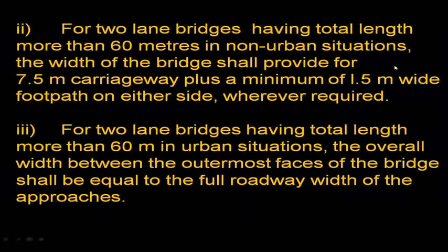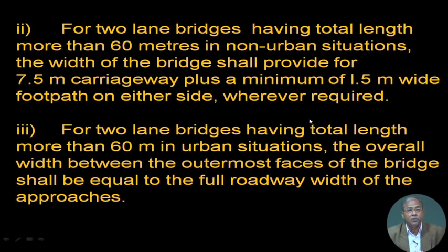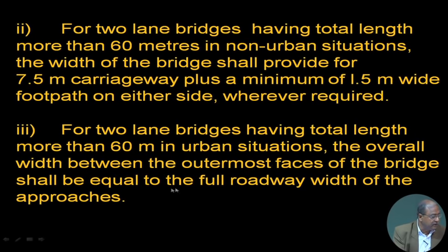There is a certain kind of expansion possible, and nowadays many state highways and national highways are doing that. That is why it is always wise to go for certain dimensions. Sometimes they make the footpath only 0.75 or 1 meter, which is not a wise decision. For two-lane bridges in urban situations with total length more than 60 meters, the overall width shall equal the full roadway width of the approaches. 7.5 meters is very common for double lane, and 11 meters for three lanes — but that should be unidirectional.